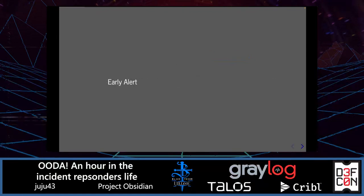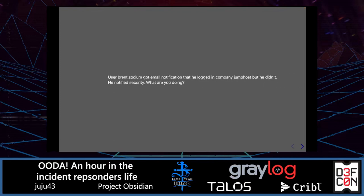Let's move to an early alert. As part of Project Obsidian, the team has simulated different scenarios and kill chains. During an early level of this attack, we got a notification. In this case, user Brent Sorcyon got an email notification that he logged into the company jump post — but he didn't. Being a good company member, he notified security. You are security — what are you doing?